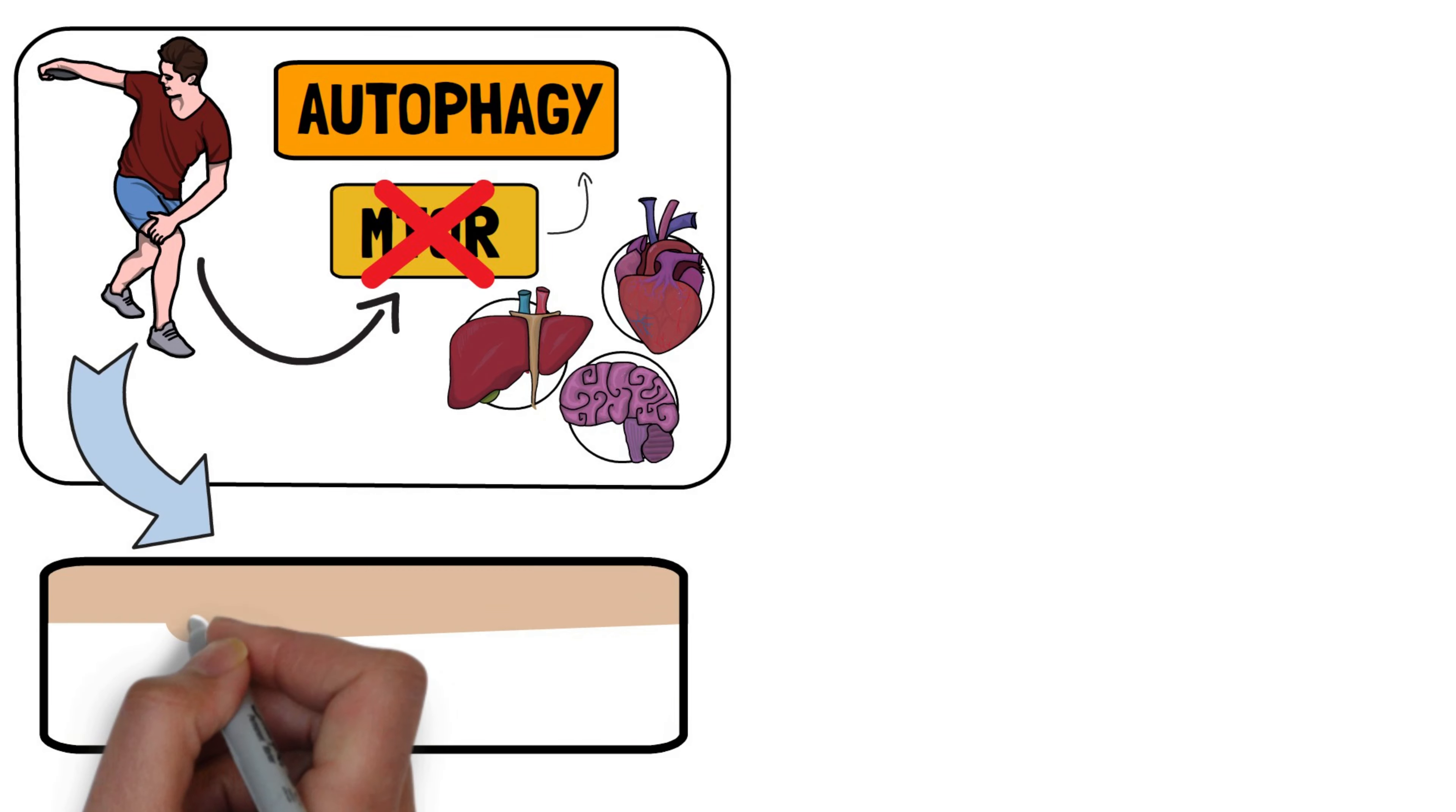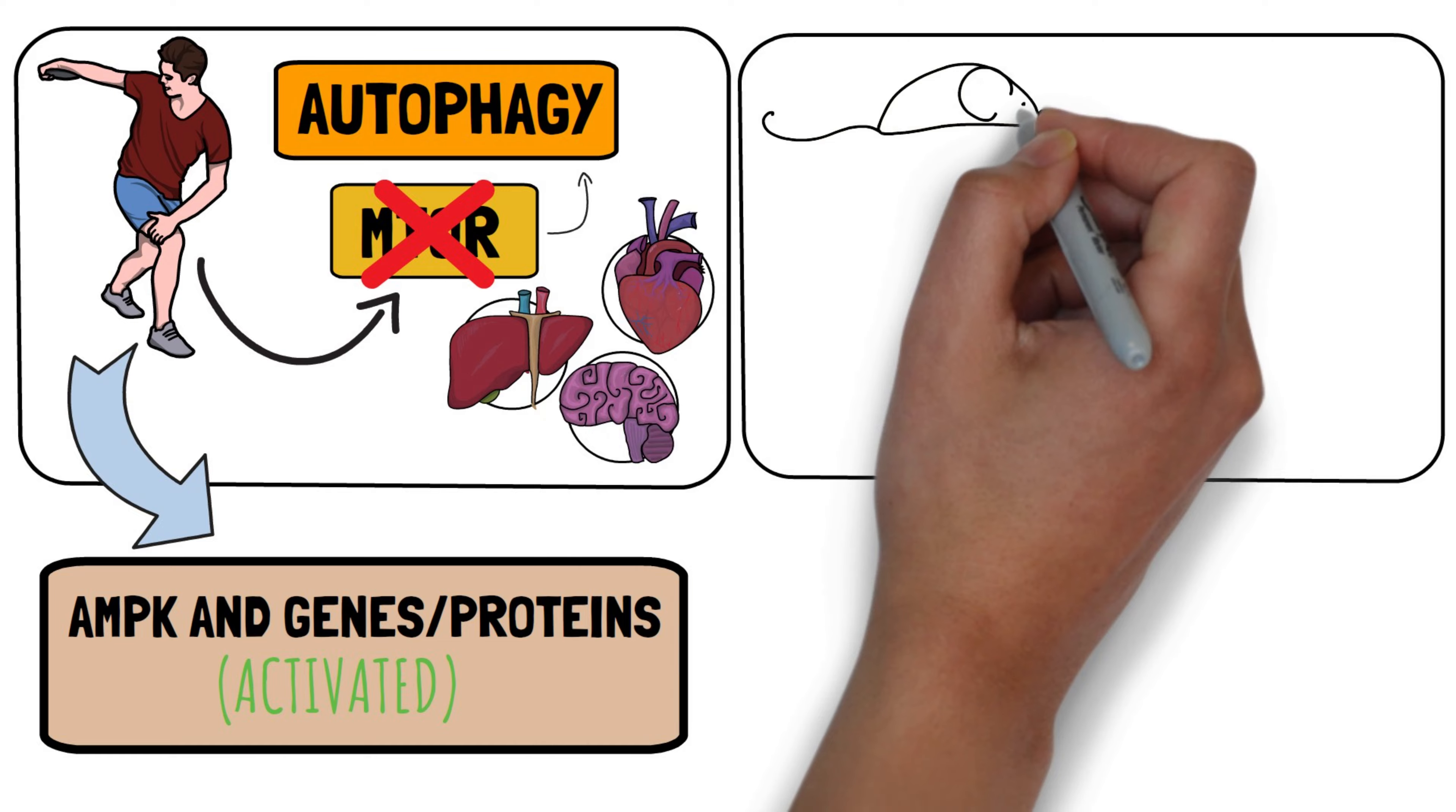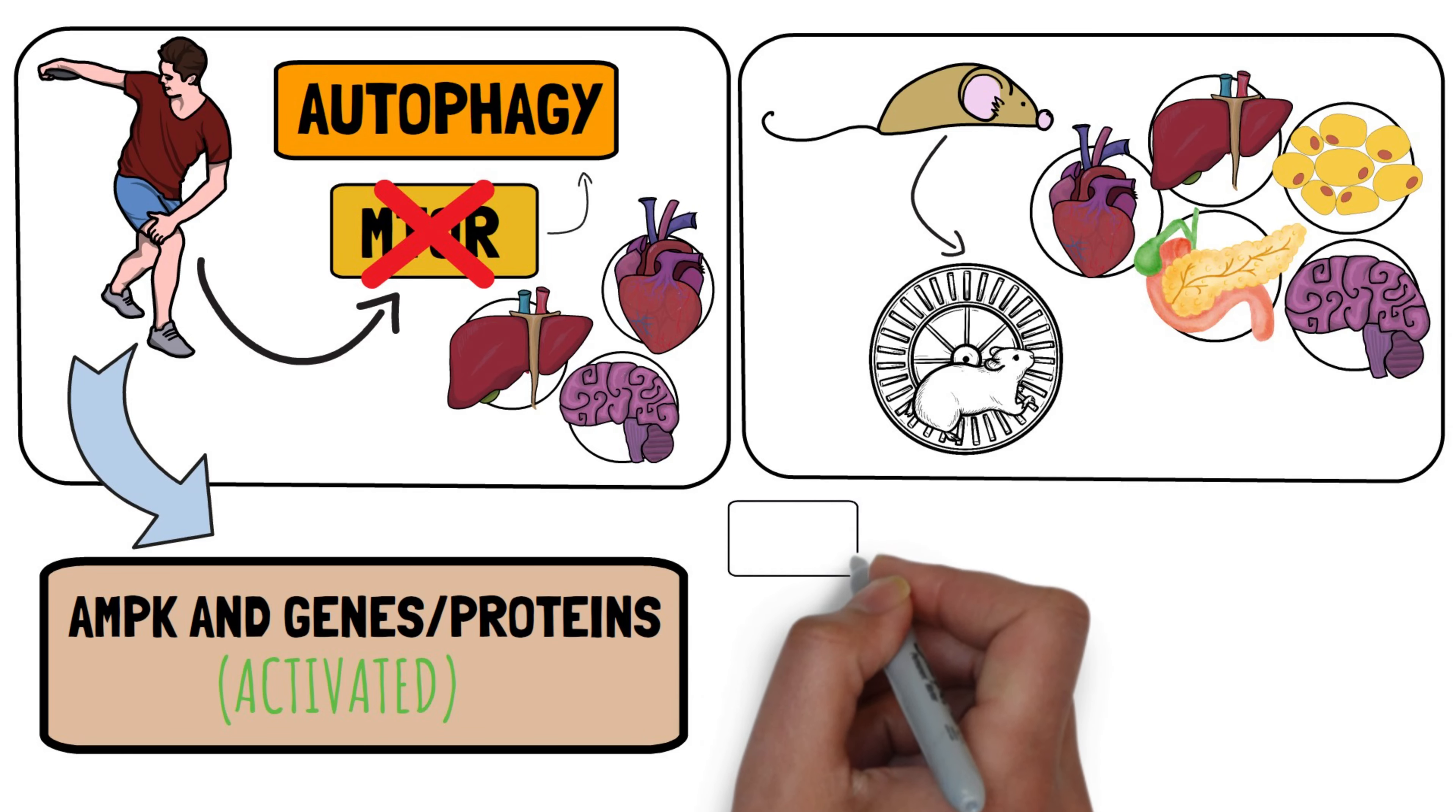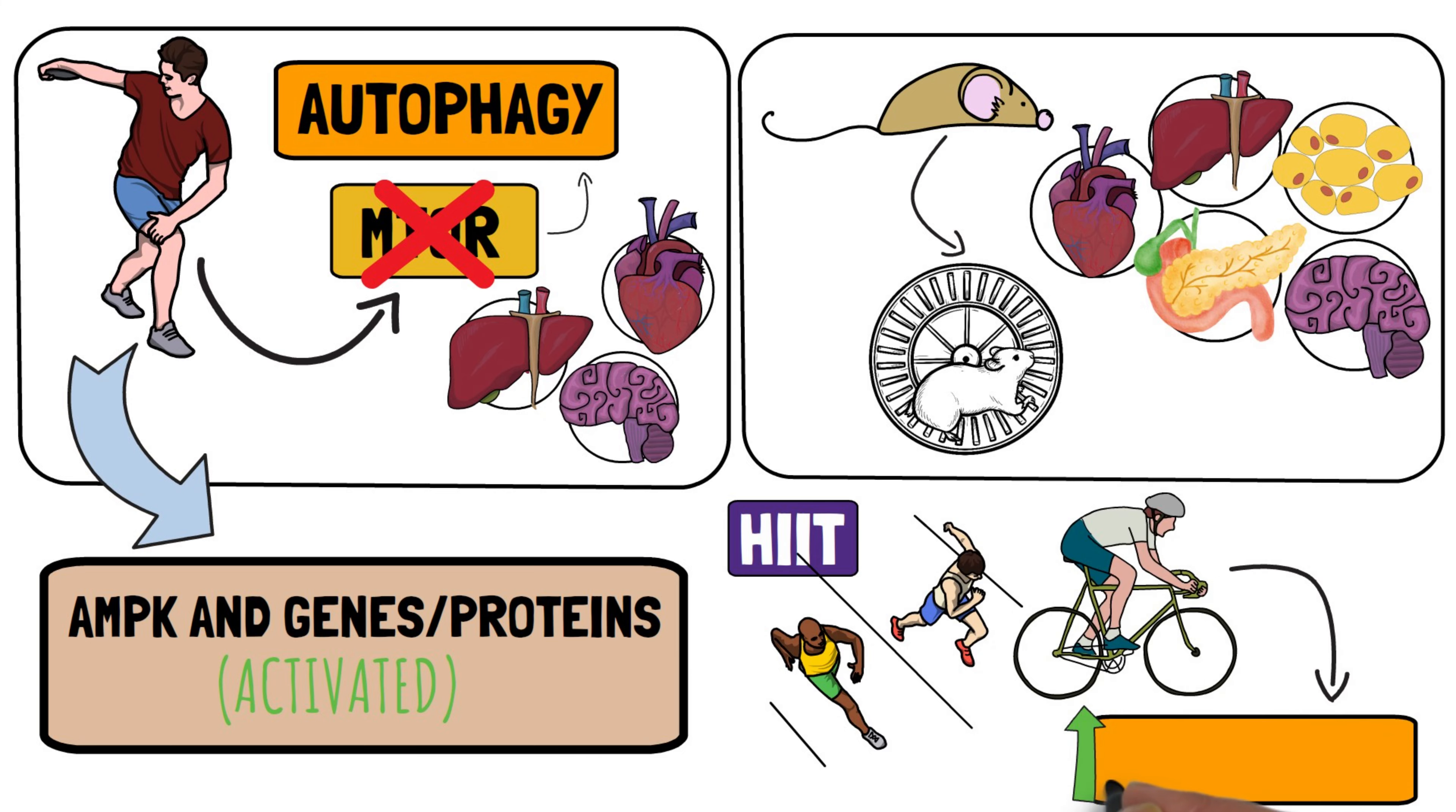Exercise activates AMPK and genes or proteins related to autophagy. In mice, endurance exercises boost autophagy in the heart, liver, pancreas, fat tissue, and brain. In humans, high-intensity exercises like marathon running and cycling also elevate autophagy levels.